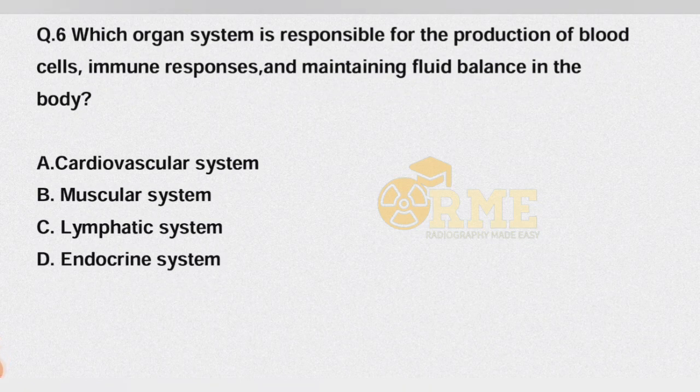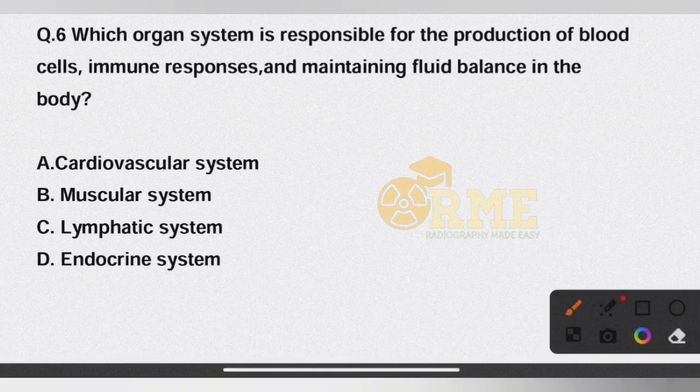Question number 6: which organ system is responsible for the production of blood cells, immune responses, and maintaining fluid balance in the body? The correct answer is option C.